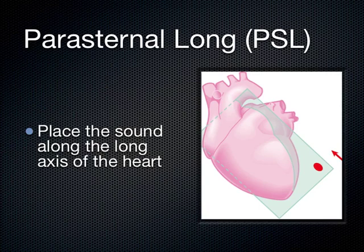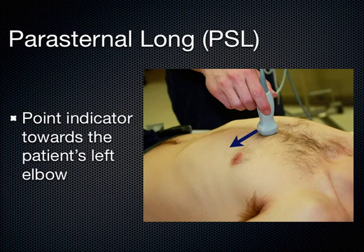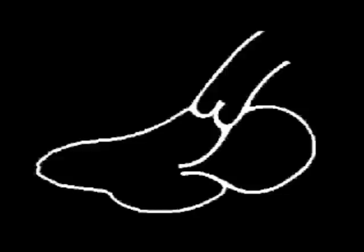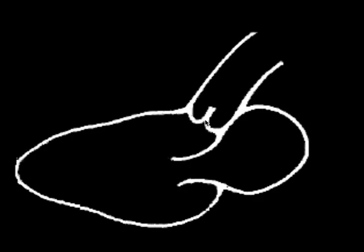For the parasternal long view, the indicator is aimed at the patient's left hip or left elbow. As the name suggests, it's a long axis view of the heart — 'para' means next to, sternum long. You align the sound along the longest axis of the heart with the indicator toward the left hip, which puts the apex on the indicator side of the screen. This is a three-chambered view showing the left atrium, left ventricle, aortic outflow tract, and right ventricle sitting anteriorly.